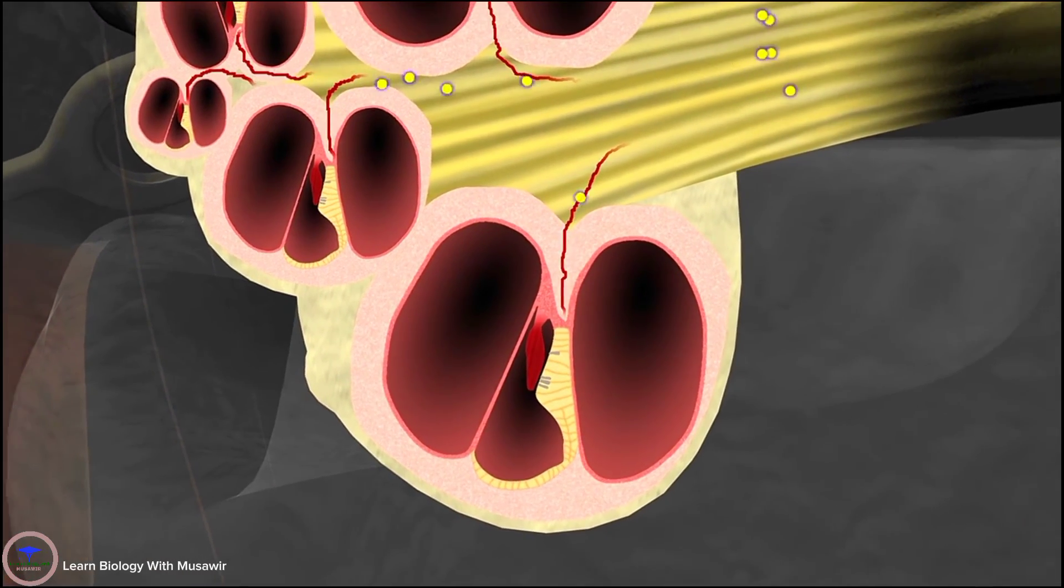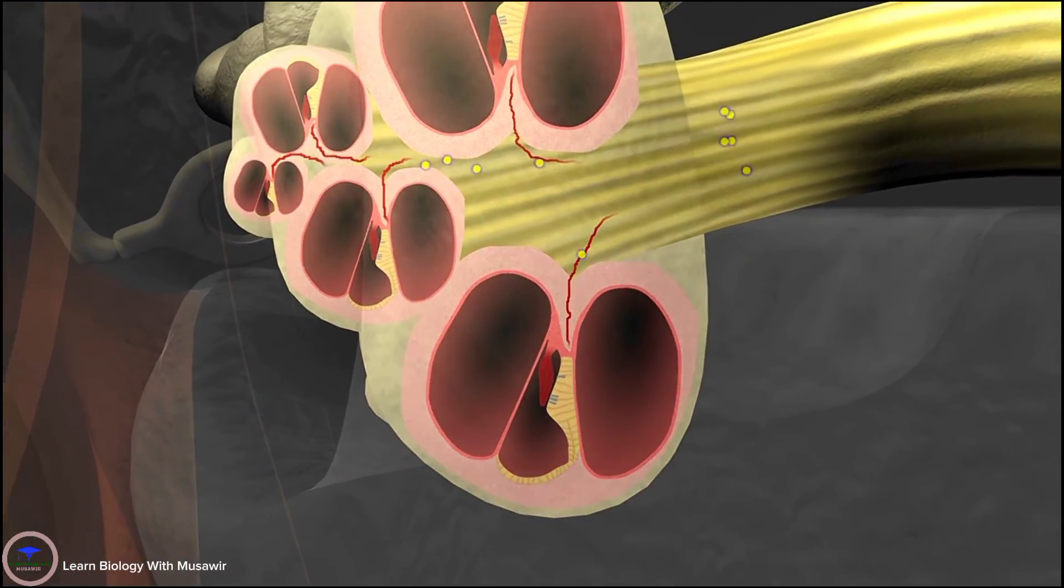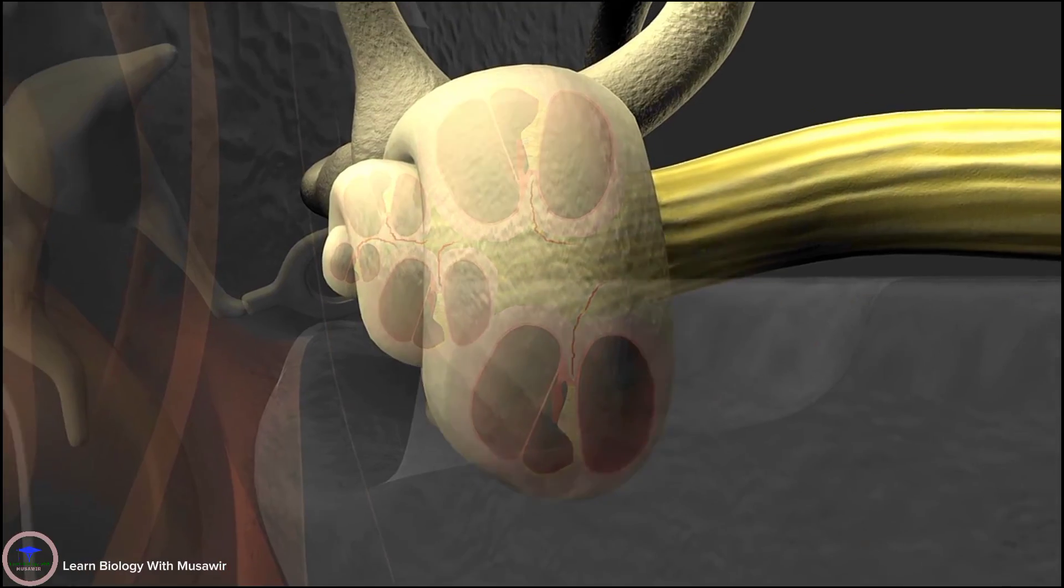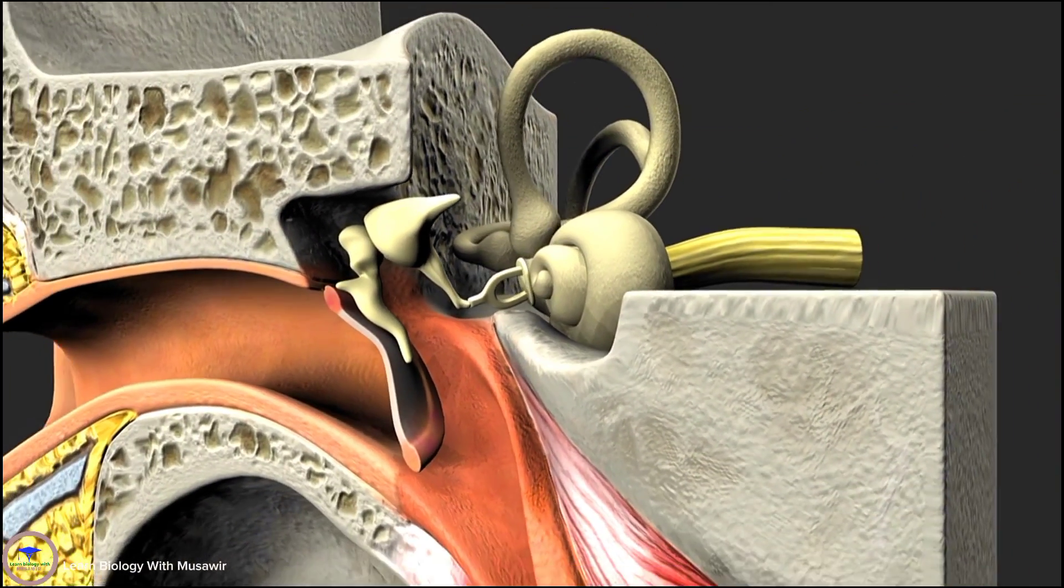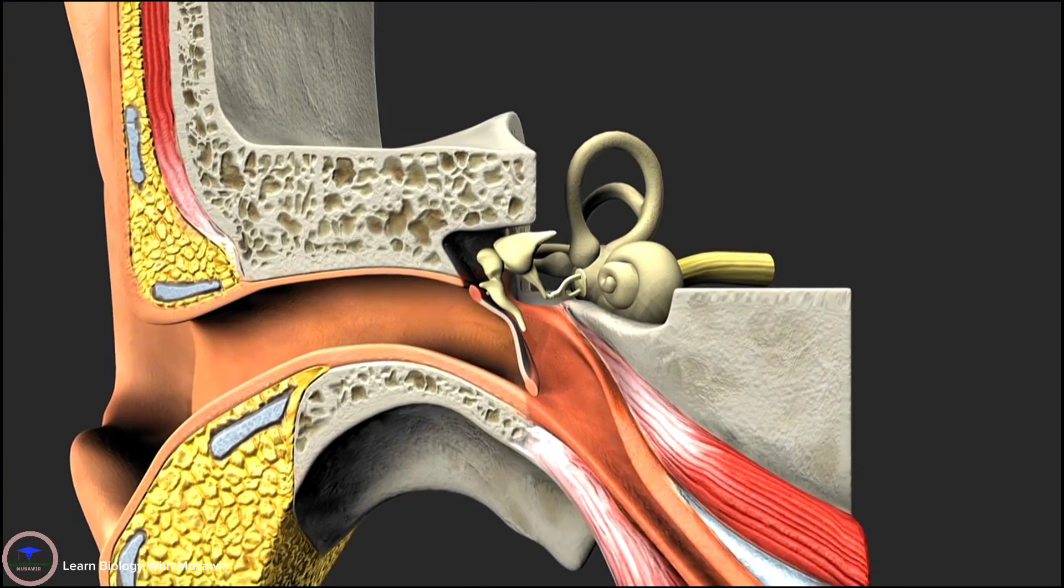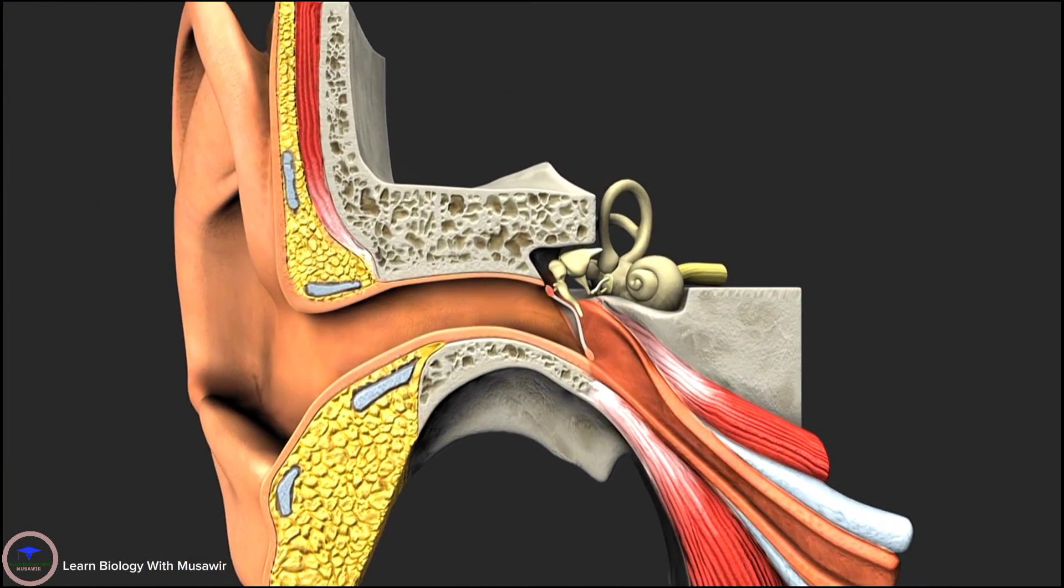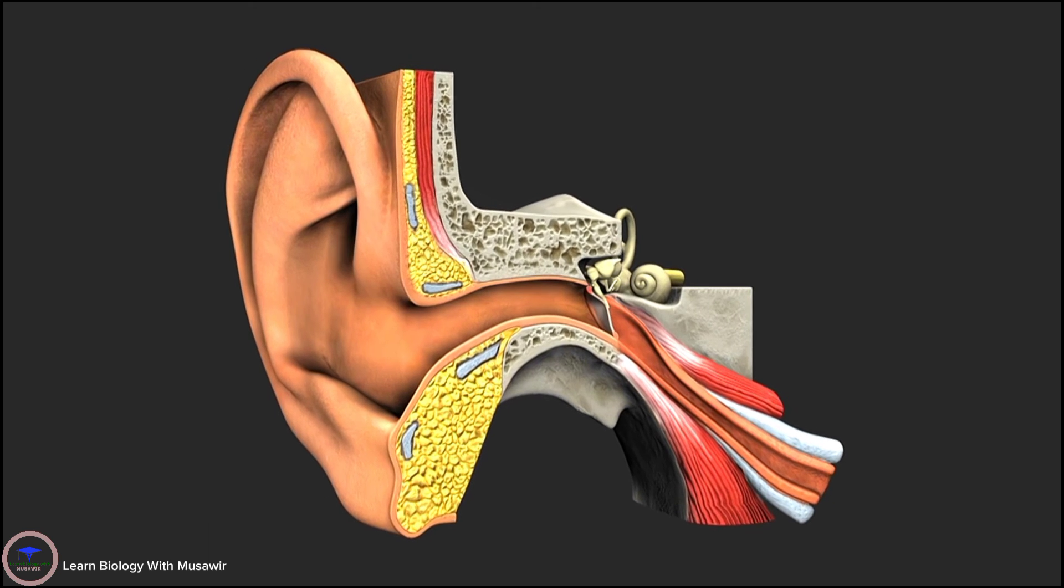These charges make a neural impulse which travels along the auditory nerve to the brain and which is interpreted as sound. This complex mix of physical, chemical, and mechanical processes occurs almost instantaneously and creates our perceptions of the sounds we hear in everyday life.